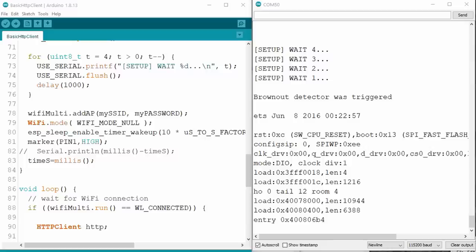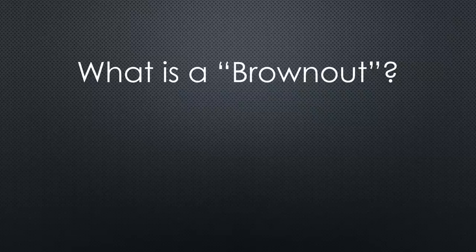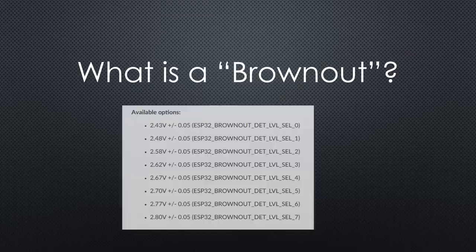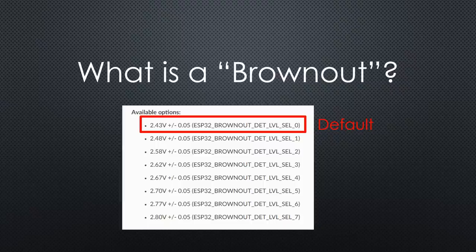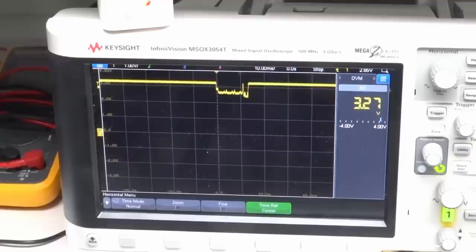But as soon as it starts to call the internet, a brownout is detected and the ESP32 crashes. Not good. First, what is a brownout? It is triggered by a low voltage of below 2.43V. This cannot be. My USB hub delivers 5V and the ESP32 board has a 3.3V regulator built-in. So, let's check.